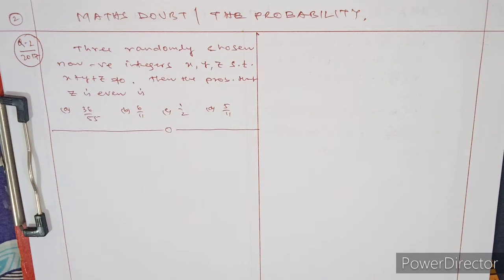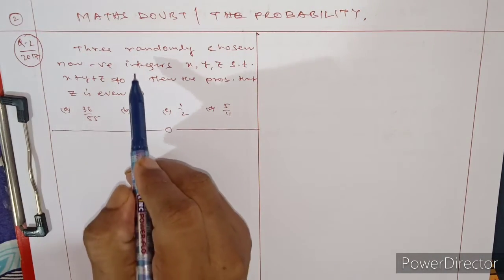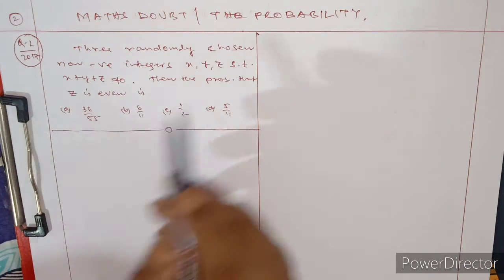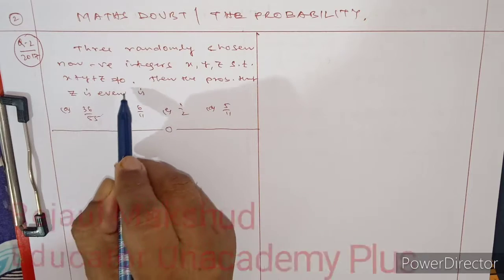Hi everyone, welcome to today's 2iit. My dear friends, today I am here to discuss a math doubt from probability. Three randomly chosen non-negative integers x, y, z such that x + y + z equals 10.